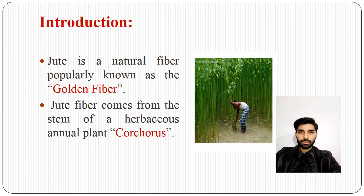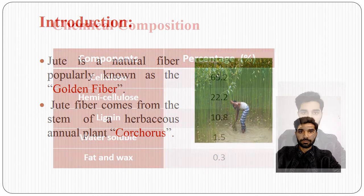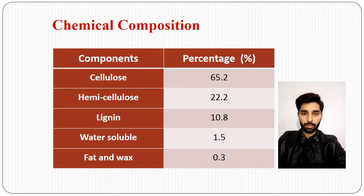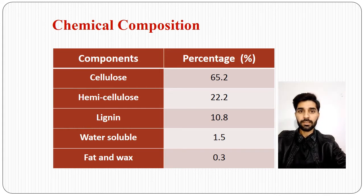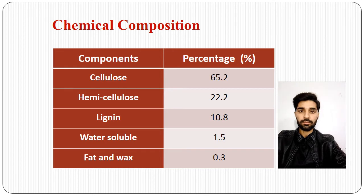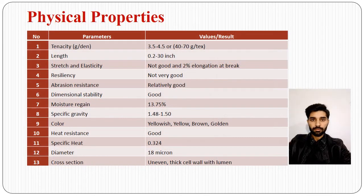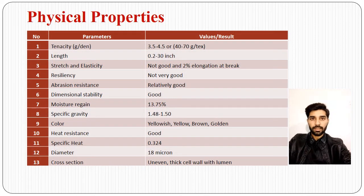Jute is also known as golden fiber because of its color. The chemical composition of jute fiber is as follows: cellulose 65.2%, hemicellulose 22.2%, lignin 10.8%, water soluble materials 1.5%, and fat and wax 0.3%. The physical properties of jute fibers are as follows: it has 40 to 70 gram per tex in tensile strength.